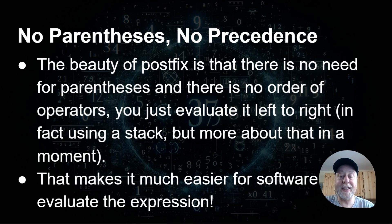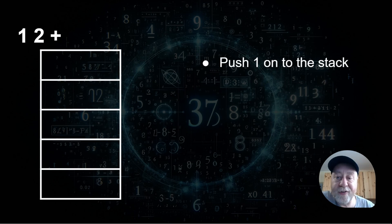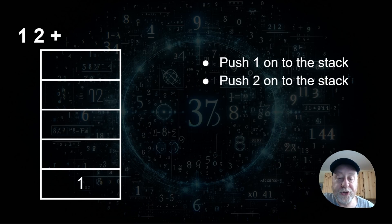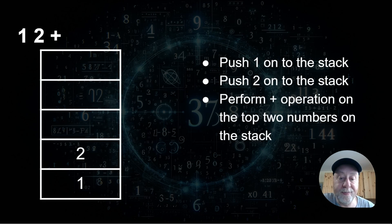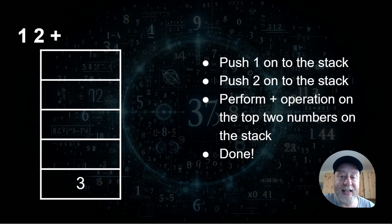It's really easy — you just literally go from left to right on a stack and evaluate it as it is. For example, take one two plus: push one onto the stack, then push two onto the stack. Then you hit the plus operator, so you add the top two numbers on the stack. That gives you three. You put it on the stack and that's the end of the expression, so the answer is three.